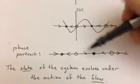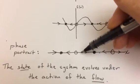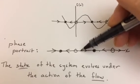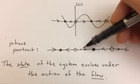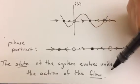And so to refer to the position, we say the state of the system. And the state of the system, we sometimes talk about it flowing or evolving, and so we say that the state of the system evolves under the action of the flow.